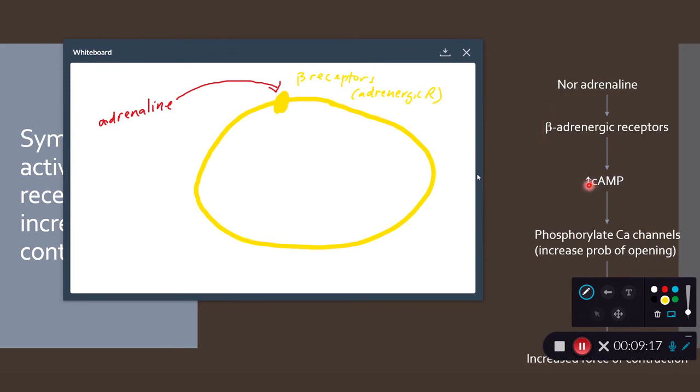When it binds the beta receptors, we get a release of cyclic AMP, and that's through adenylate cyclase. In other words, these are second messenger receptors. This is the second messenger receptor coupled to a G protein. The G protein is activating adenylate cyclase and that's causing a rise in cyclic AMP.